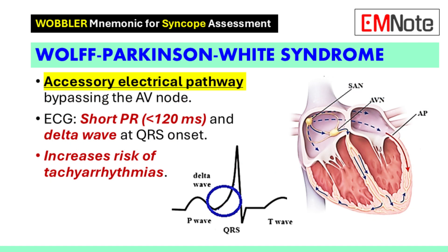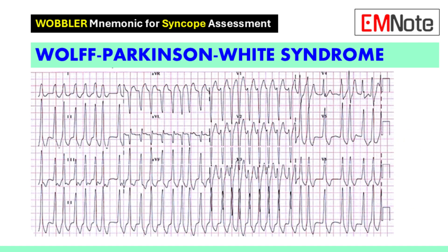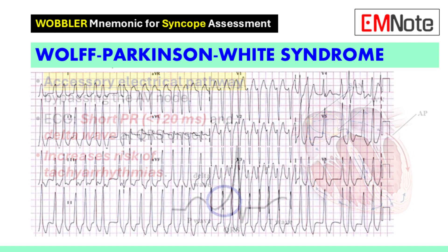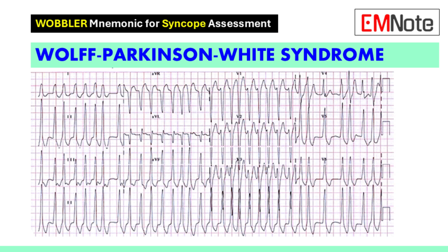Wolff-Parkinson-White syndrome is characterized by the presence of an accessory electrical pathway between the atria and ventricles, bypassing the normal atrioventricular node pathway. On an electrocardiogram, this condition presents with a PR interval of less than 120 milliseconds and a delta wave at the beginning of the QRS complex. Patients with this syndrome are at an increased risk of developing tachyarrhythmias.